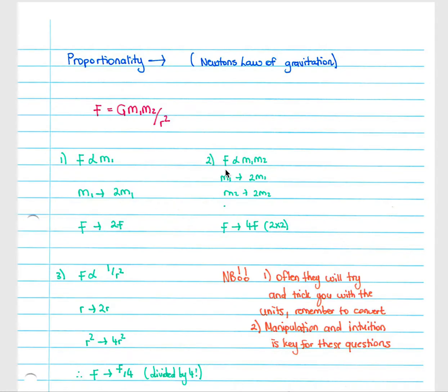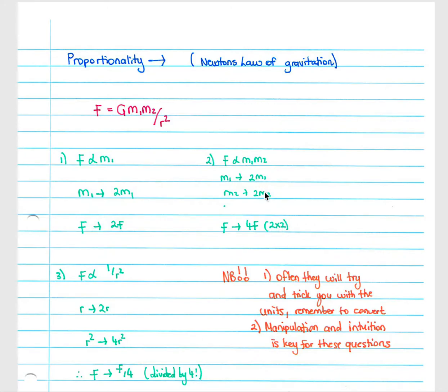The second derivation from the formula: F is directly proportional to the product of mass one and mass two. If we increase mass one to two m1 and increase our second mass to two m2, our force, because it is directly proportional to the product of the masses, is therefore increased to four times the original force. We get that from two times two — double mass one, double mass two — multiply the coefficients and we get four.